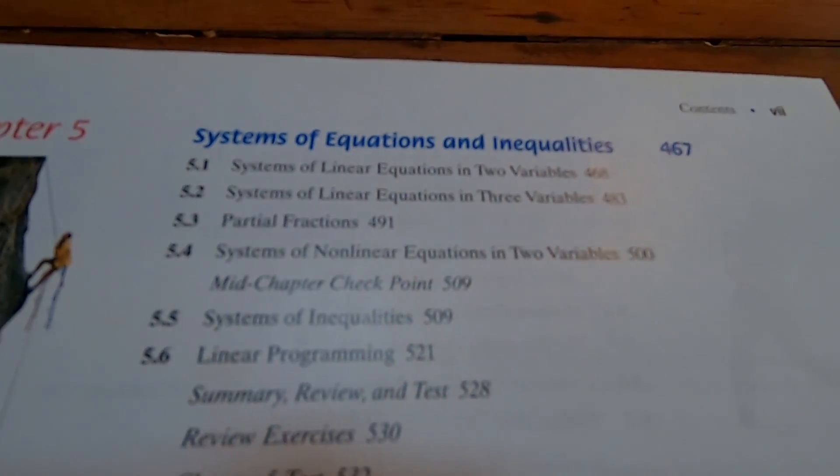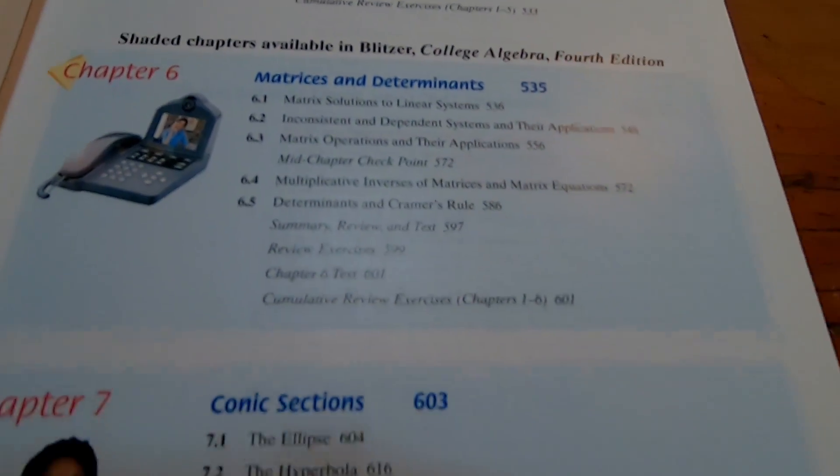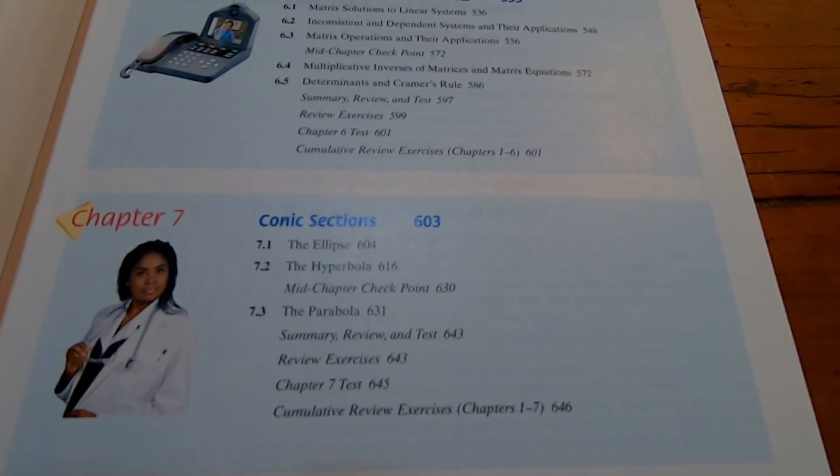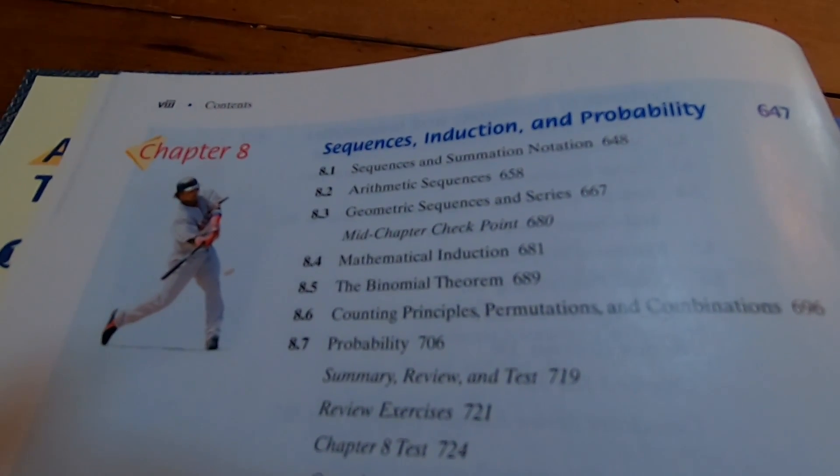Then it goes on to system of equations and inequalities. Six is on matrices and determinants. Seven is on conic sections. And the last chapter is on sequences, induction, and probability.